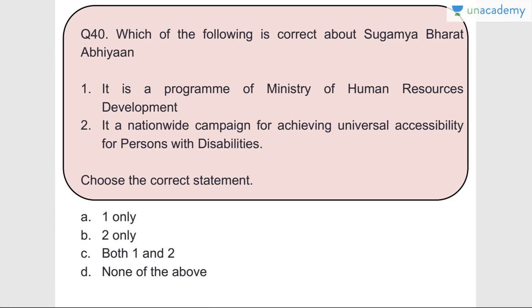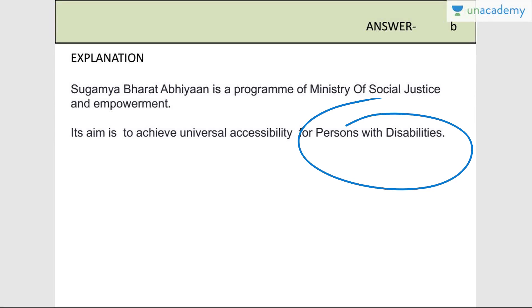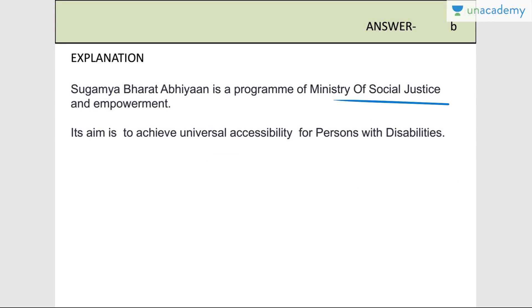Question number forty: Which of the following is correct about Sugamya Bharat Abhiyan? Statement one - it is a program of Ministry of HRD - wrong. Statement two - it is a nationwide campaign for achieving universal accessibility for persons with disabilities - correct. Answer is B, two only. It is under the Ministry of Social Justice and Empowerment and aims to achieve universal accessibility for persons with disabilities.